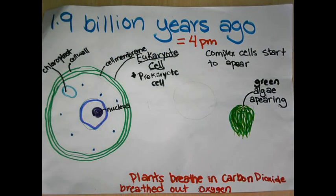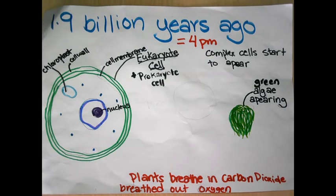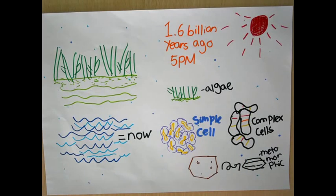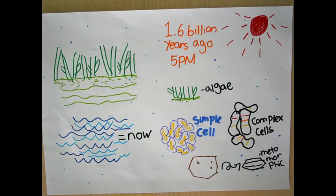1.9 billion years ago, at 4 p.m., there was not enough oxygen for life to live. But some complex cells started to appear, like eukaryotes. Plants breathe in carbon dioxide and breathe out oxygen. The atmosphere's development, evolution, and growth of life increased the quantity of oxygen. The first green and blue algae appeared. Common rocks were metamorphic. There were simple cells, complex cells, and photosynthesis.